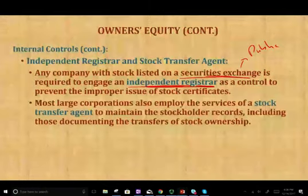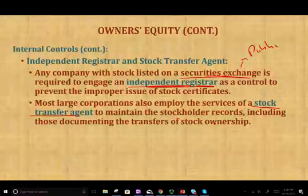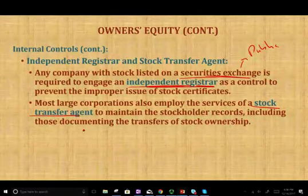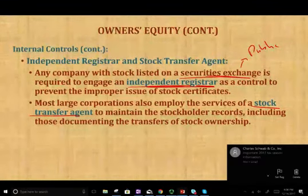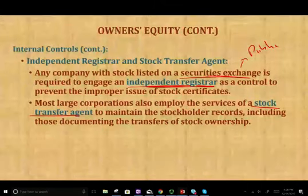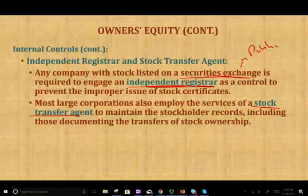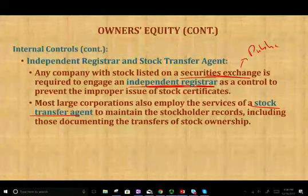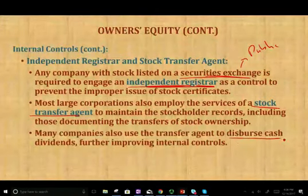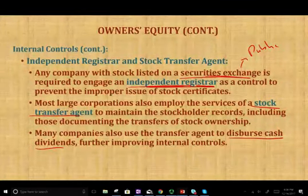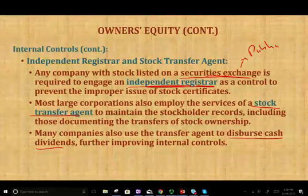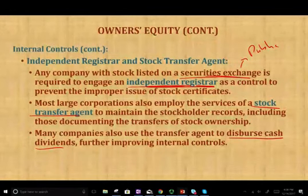Most large corporations also employ the services of a stock transfer agent to maintain stockholder records, including those documenting the transfer of stock ownership. When one person buys and sells their stock to another person, the stock transfer agent — rather than the company — keeps track of this. Most companies also use a transfer agent to disburse cash dividends, further improving internal control, and since this agent is independent from the company being audited, it makes auditing easier.